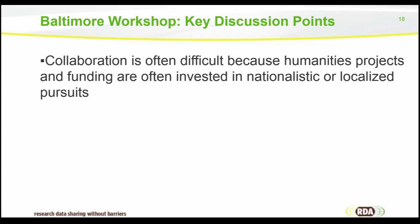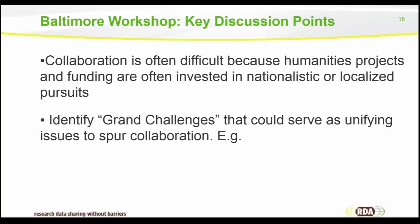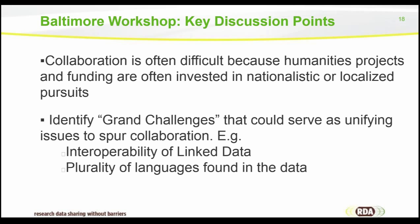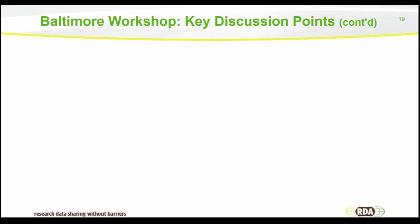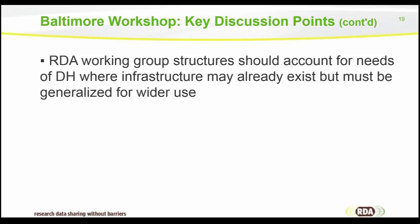Collaboration was a key discussion topic. The fact is that collaboration is often difficult because humanities projects and funding are often invested in nationalistic or localized pursuits, and here we were talking specifically about global collaboration. We spent some time identifying grand challenges that might serve as unifying issues to spur collaboration — for example, interoperability of linked data, which is a very actively pursued topic in the humanities right now, and ways to address the plurality of languages found in the data.